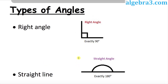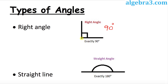Next we have the right angle and the straight line. The right angle is always exactly 90 degrees, and we use a small box symbol to represent it. This is our vertex in each case. The straight line is exactly 180 degrees, which means the two lines are simply opposite to each other.